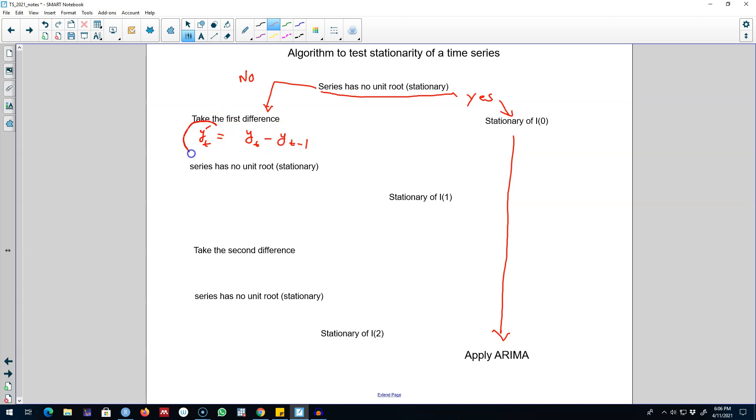Now we ask the same question again: whether this series yt prime has no unit root or not. If this series is stationary now, then this series will be called integrated of order 1, that is, this series is stationary at the first difference, then we can go ahead and apply ARIMA model on this series.